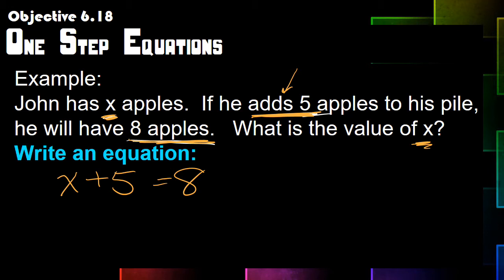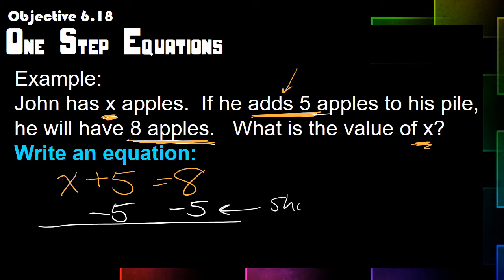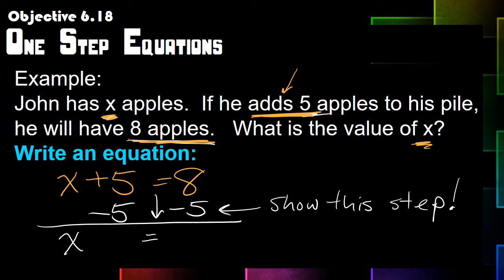To solve for X, we're going to undo this addition of five by subtracting five from both sides of the equation. Always show this step — future problems will build on each other. What this looks like is: X gets by itself, we bring down the equal sign, and we do eight minus five, which gives us three. So X equals three.